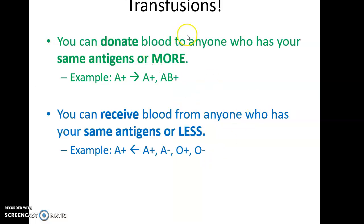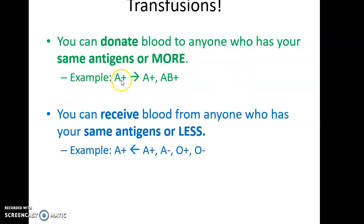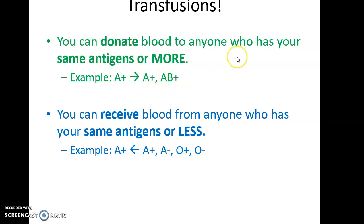You can donate blood to anyone who has your same antigens or more. I, Adam, have blood type A positive. So I could give my blood to someone who is A positive or to somebody who is AB positive — same antigens or more. That's who I can personally give blood to: A positive and AB positive, that's it.